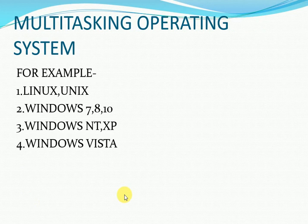Next is multi tasking operating system. An operating system that is capable of allowing multiple software processes to run at the same time is called a multi tasking operating system. The examples of multi tasking operating systems are shown on screen.